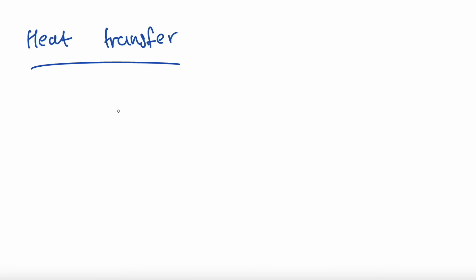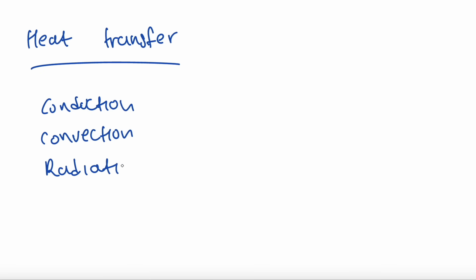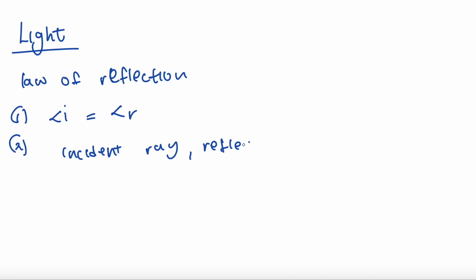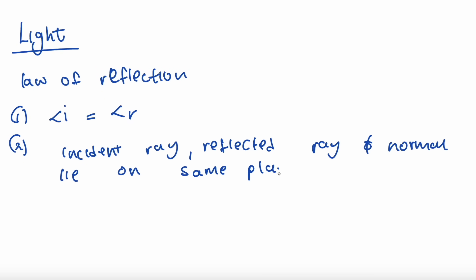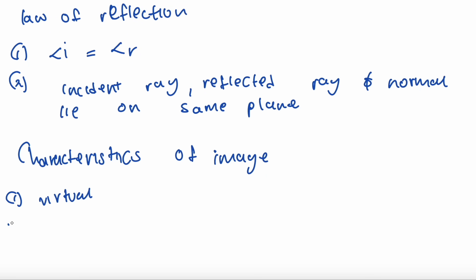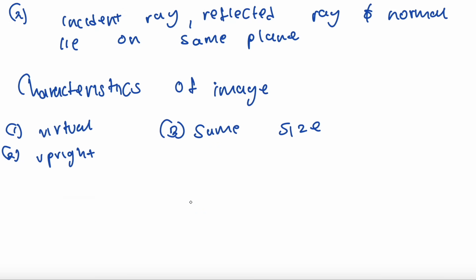Let's have a look at heat transfer. We have conduction, convection, and radiation. Now for light: the law of reflection states the angle of incidence equals the angle of reflection. The incident ray, reflected ray, and the normal lie on the same plane. The characteristics of an image in a plane mirror are that it is virtual, upright, and the same size.